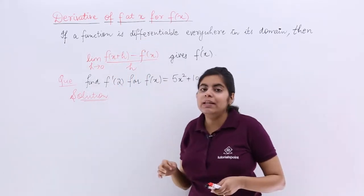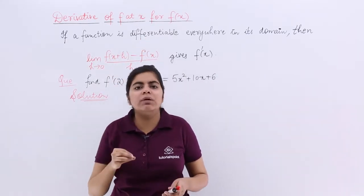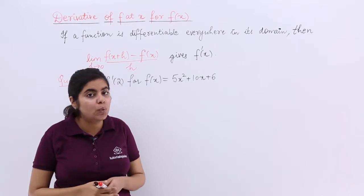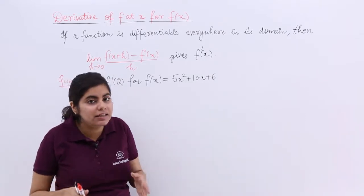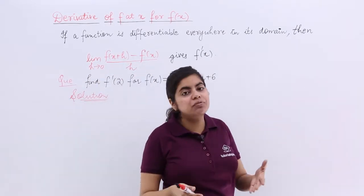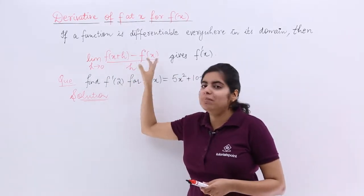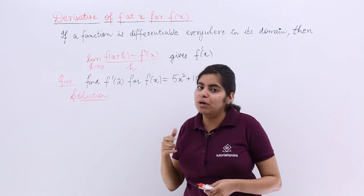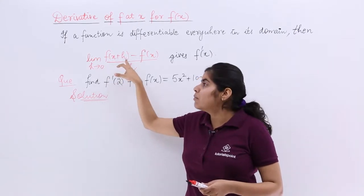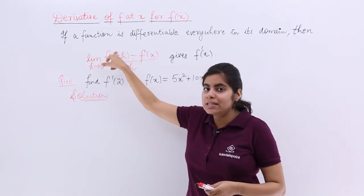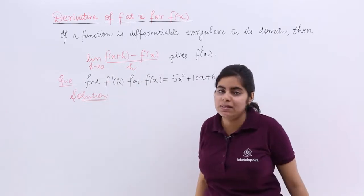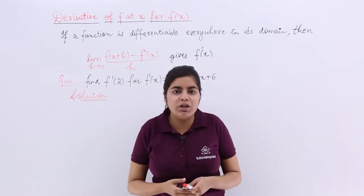If a function is differentiable at each point in its domain, then the derivative of that function, f dash x, can be given by this formula or even one more formula was there, fx wherein we had here minus, minus h and here also minus h.